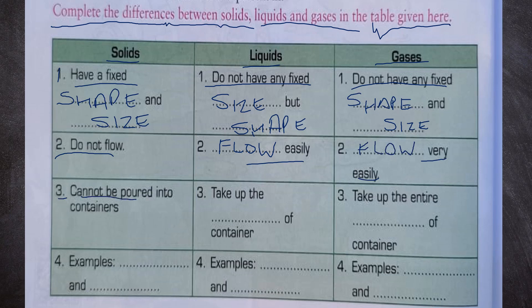Number 3: Solids cannot be poured into containers. Liquids take up the shape of the container, and gases take up the entire space of the container. Number 4: Examples of solids are table, chair, etc. Examples of liquids are water, milk, etc. Examples of gases are hydrogen, oxygen, carbon dioxide, etc.